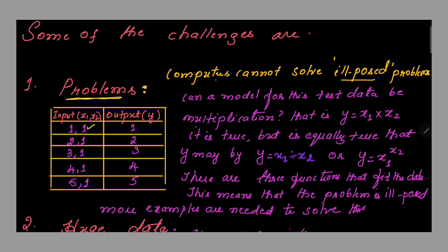This is the input data fed to the algorithm for training purposes, wherein there are two numbers — x1 and x2 — with values (1,1), (2,1), (3,1), (4,1), (5,1). The dependent variable y has values 1, 2, 3, 4, 5.